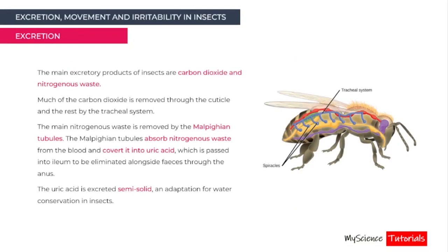For excretion, the main excretory products of insects are carbon dioxide and nitrogenous wastes. Much of the carbon dioxide is removed through the cuticle and the rest through the tracheal system. The main nitrogenous waste is removed by the Malpighian tubules, which absorb nitrogenous waste from the blood and convert it into uric acid, passed into the ileum to be eliminated alongside faeces through the anus. Uric acid is excreted semi-solid, which is an adaptation for water conservation.